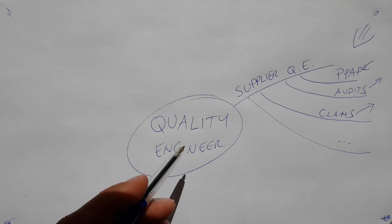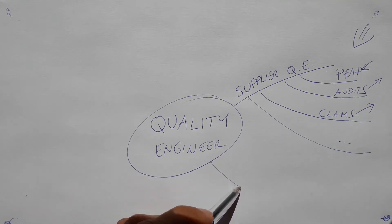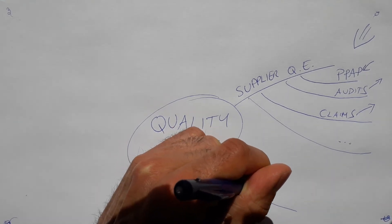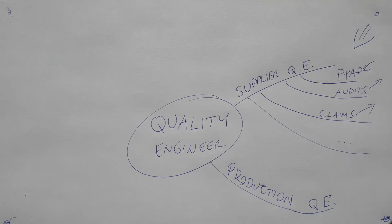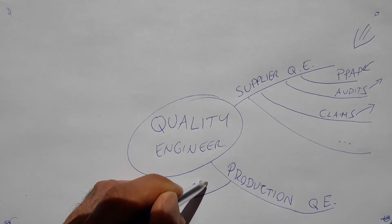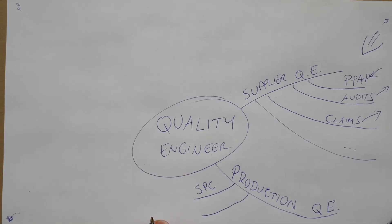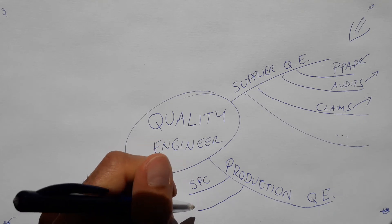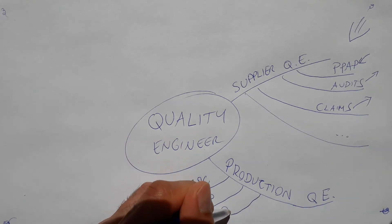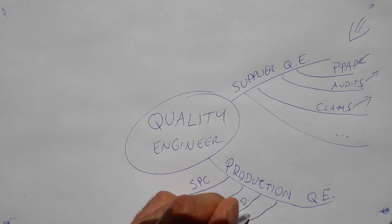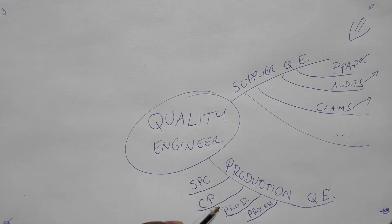Then you have the job of production quality engineer. This is more about having statistical process control, for example, checking the manufacturing issues. It can be designing control plans, dealing with the production people, the production processes, and the process engineers. Dealing with the statistics—this is statistical process control—dealing with MSA, which is measuring systems analysis, and so on. This is the production quality engineer.